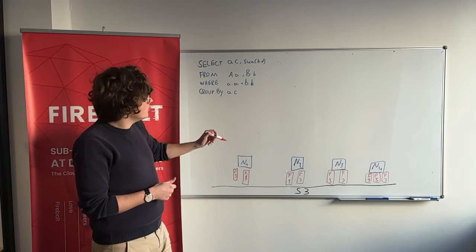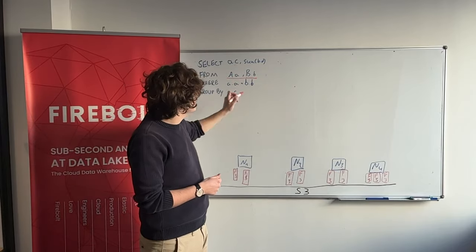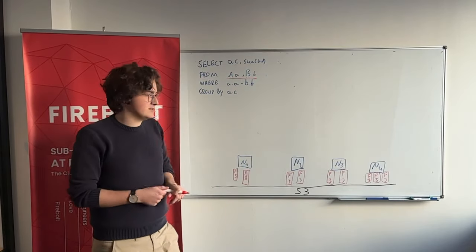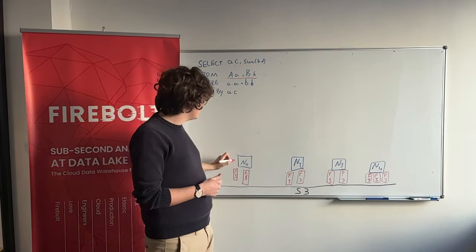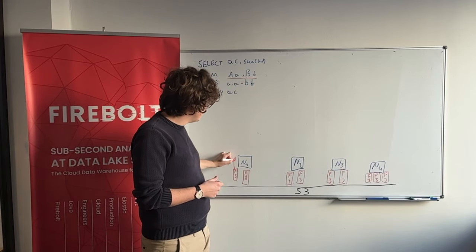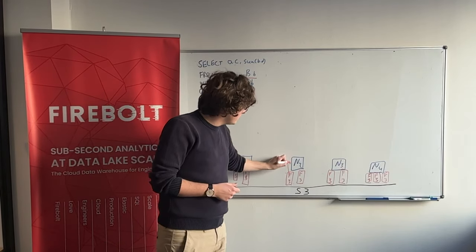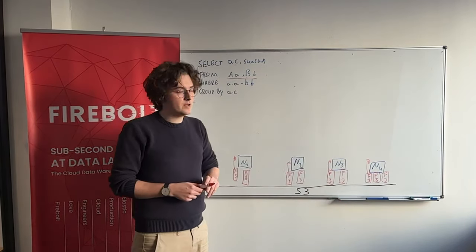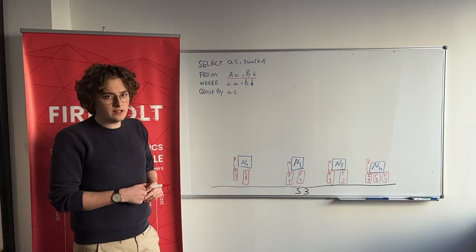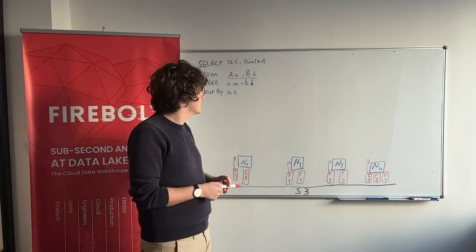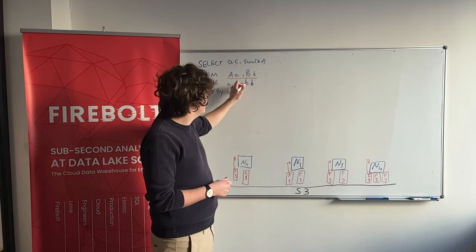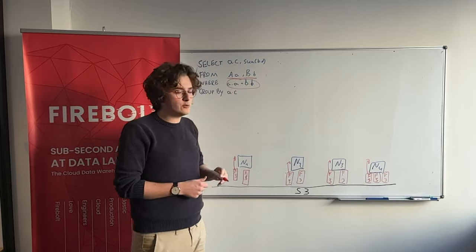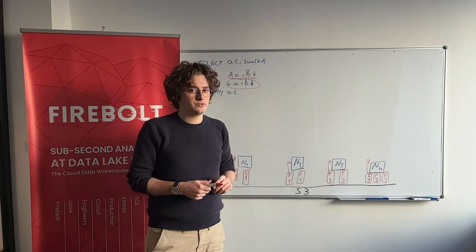So now the first thing we will do is we'll start table scans. This means each node will start reading from the local files, relations A and B, and start processing. And now the big challenge in distributed query processing is how do we get this join on A.A equals B.B to actually scale out across the cluster.